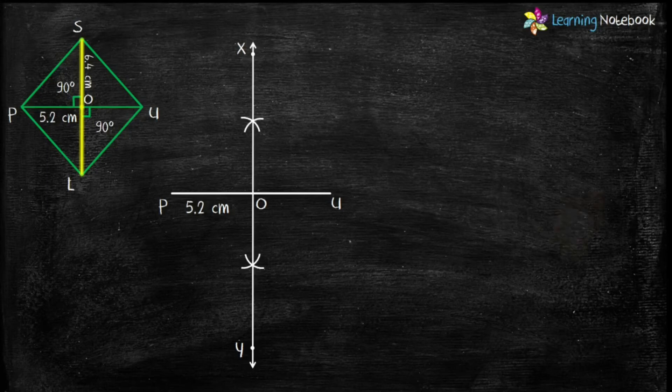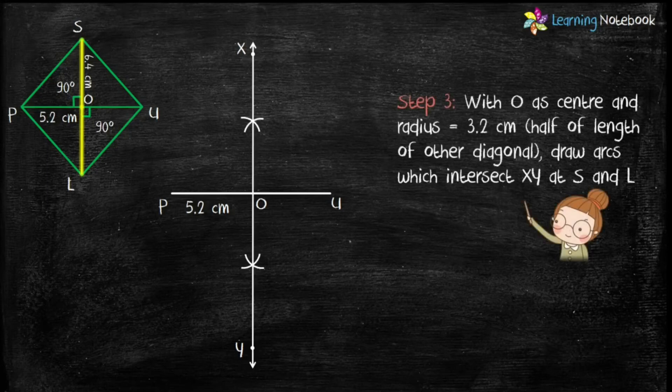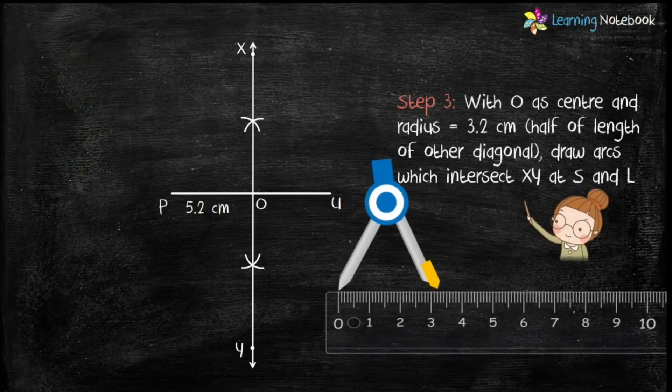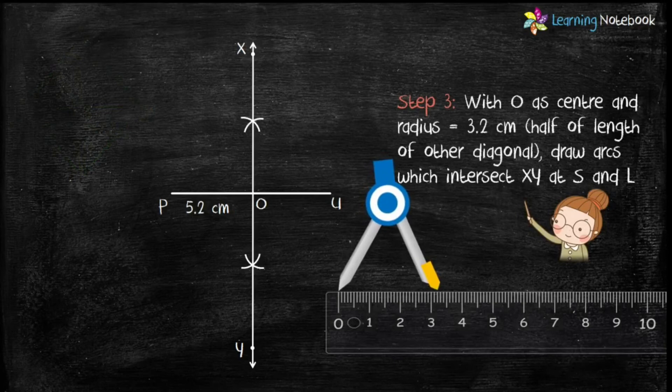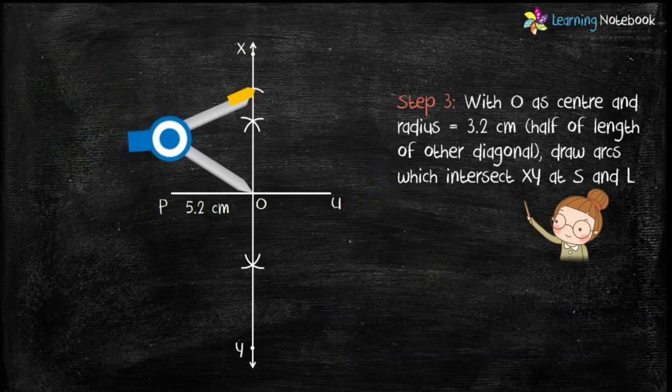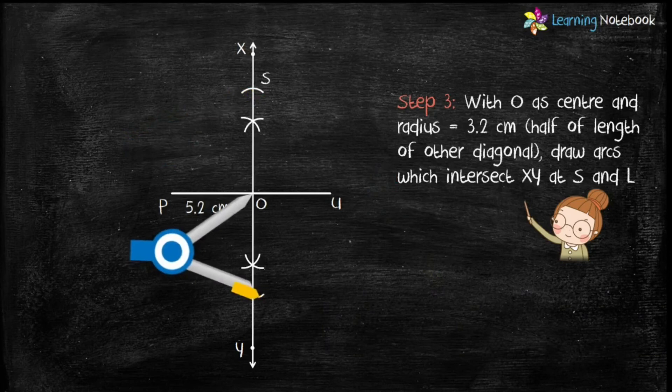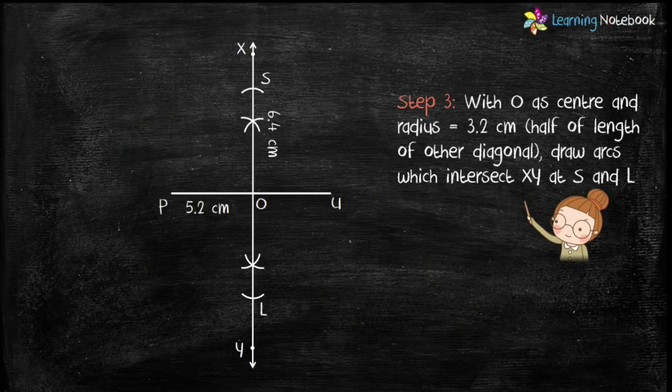So, let's draw them. Open the compass with radius 3.2 cm. And with O as center, draw two arcs which intersect with XY at points S and L.